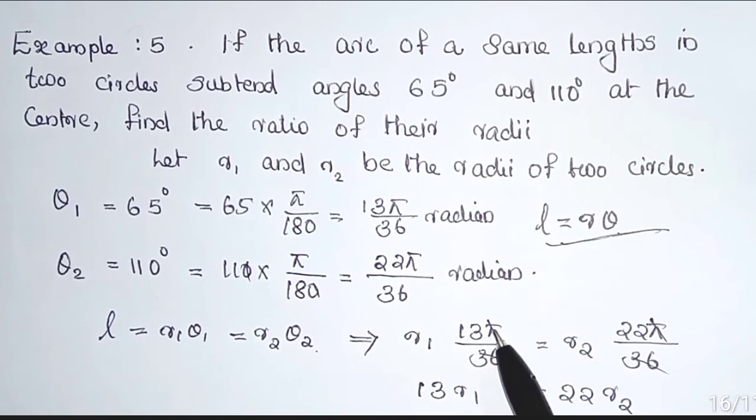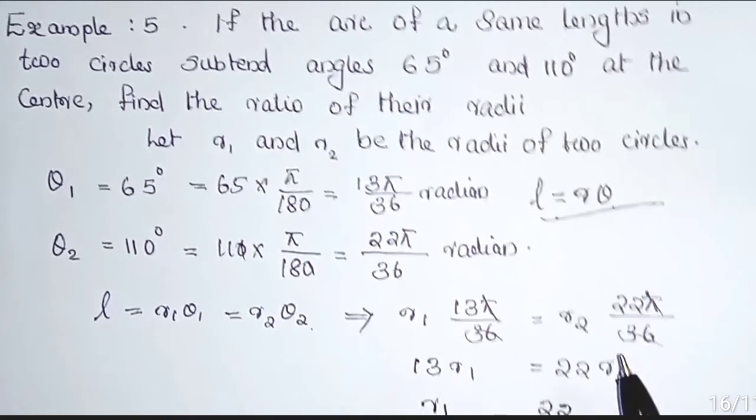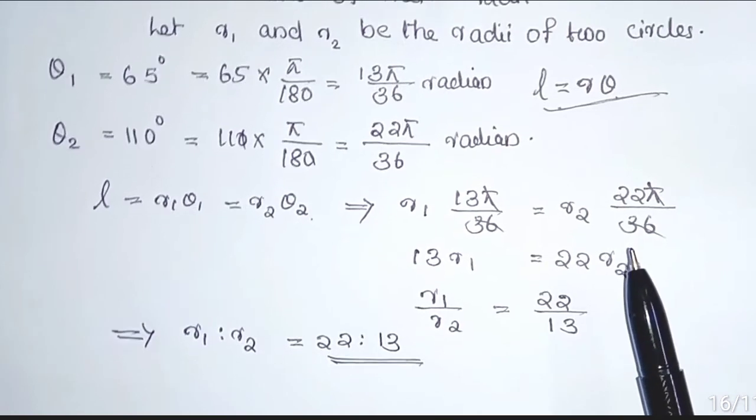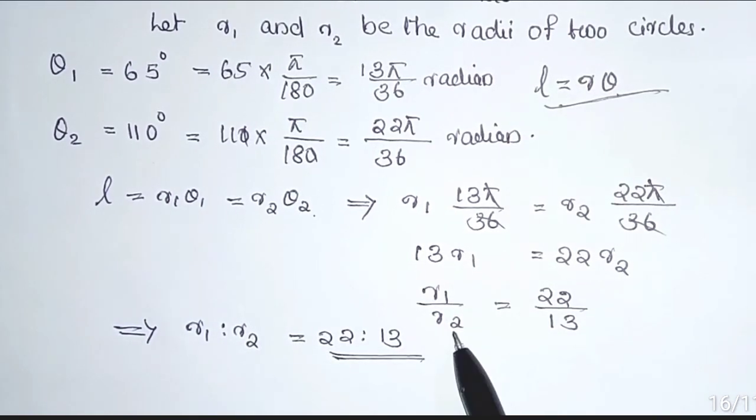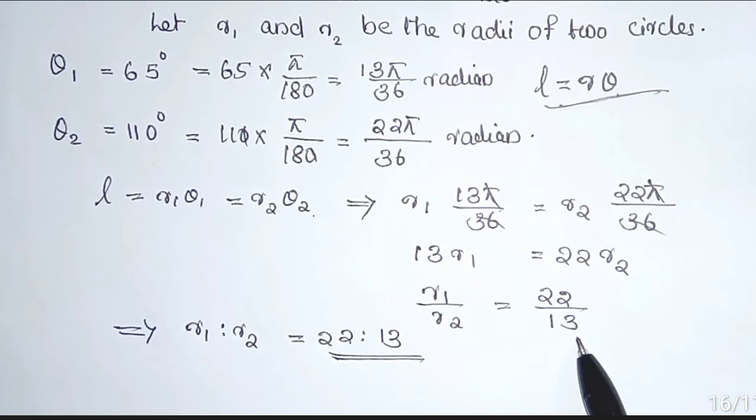36 and 36 cancelled. π and π are cancelled. Then what we got? 13r₁ = 22r₂. That implies r₁/r₂ = 22/13.